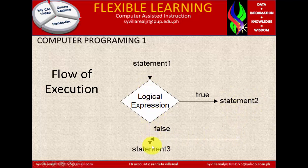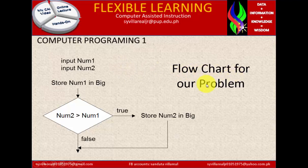And it will go right here at the end statement. Now if it is false, then it will go to the end. It means to say any of the answer true or false, it will go to the end of the program. Now we have here the flow chart for our problem. Store num1 in big. We have num2 is greater than num1, that is true. Then it will go to true, store num2 in big. It meant to say num2 is equals to big. Then it will go down.